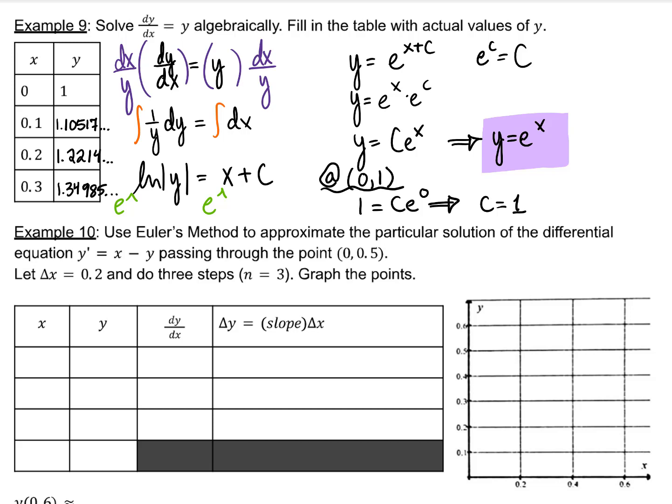Use Euler's method to approximate the particular solution of the differential equation y' = x - y, passing through the point (0, 0.5). Delta x will be 0.2, and we're going to do three steps. Sometimes they call that n equals 3. Starting at (0, 0.5), and I already know all my other x values. They will differ by a change in x of 0.2.